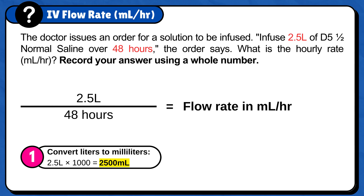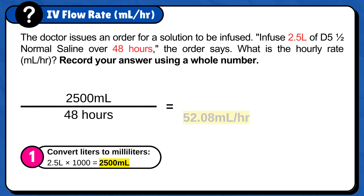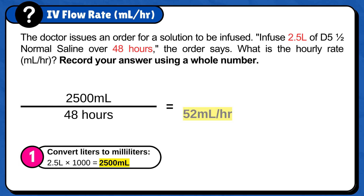Plug this answer into the formula and calculate: 2,500 milliliters divided by 48 hours is 52.08 milliliters per hour. The last step is to round to a whole number, and the final answer is 52 milliliters per hour.